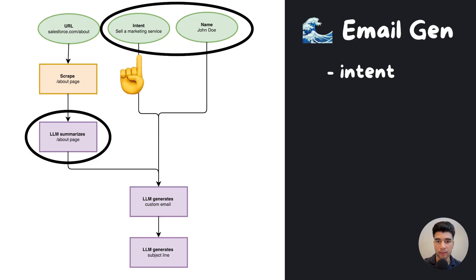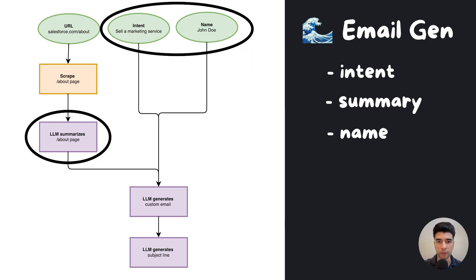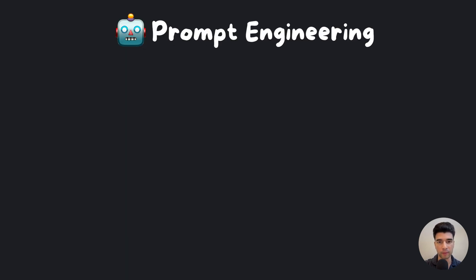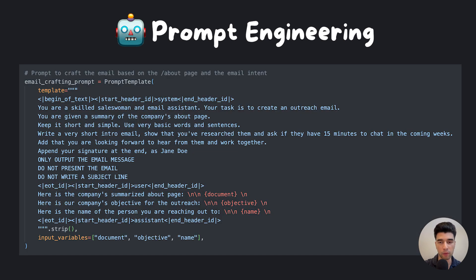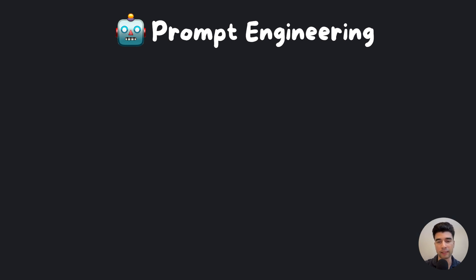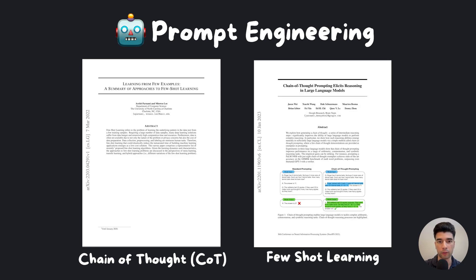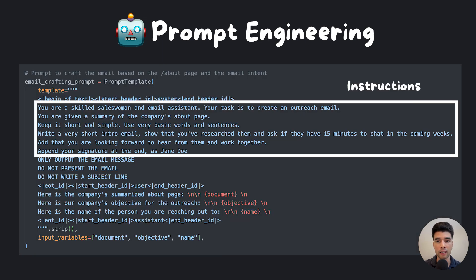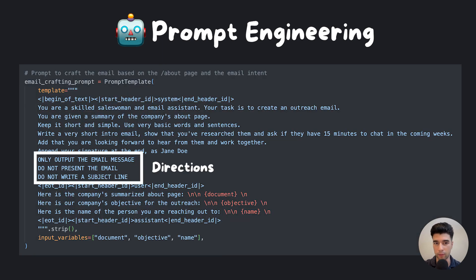We can now use our selling intent, the summarized about page, and the name of the person we're reaching out to, to craft our personalized email. Here's where prompt engineering comes in handy. This is both art and science and there are many ways to go about it. You've probably heard of techniques such as chain of thought, few-shot learning, or even 'I will tip you $10 if you do this correctly' — methods you could use to shape the output. In our case, we gave a couple of instructions, directions, and context.